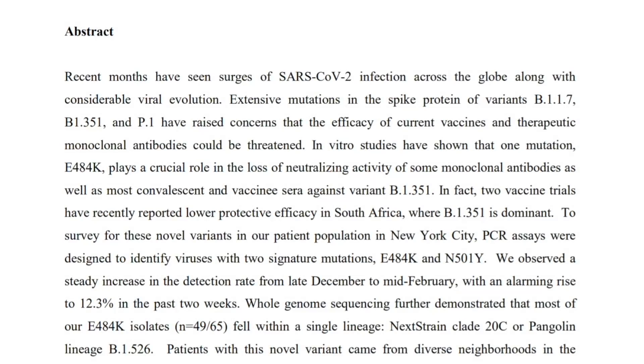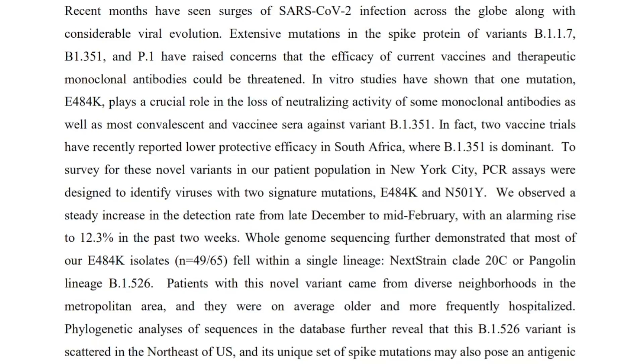As you can see in their abstract, they conclude that the phylogenetic analysis of sequences in the database further revealed that the B1.526 variant is scattered throughout the northeast of the United States, and its unique set of spike mutations may also pose an antigenic challenge for current interventions, and that would include vaccines.